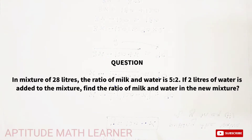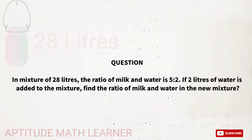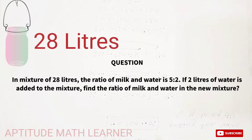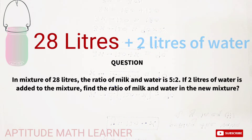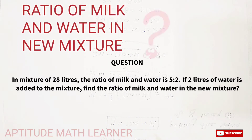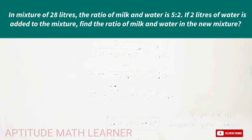Welcome to my YouTube channel Aptitude Math Learner. Today I have a very interesting question: in a mixture of 28 liters, the ratio of milk and water is 5:2. If 2 liters of water is added to the mixture, find the ratio of milk and water in the new mixture.